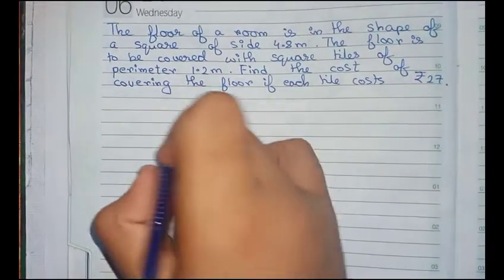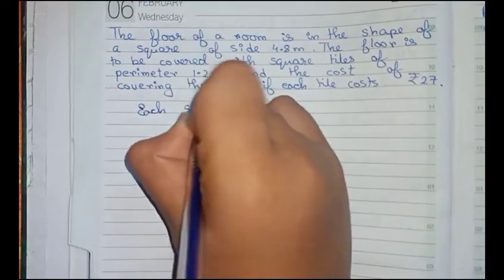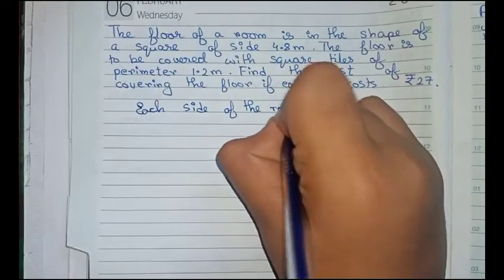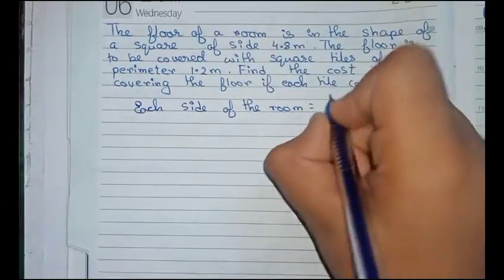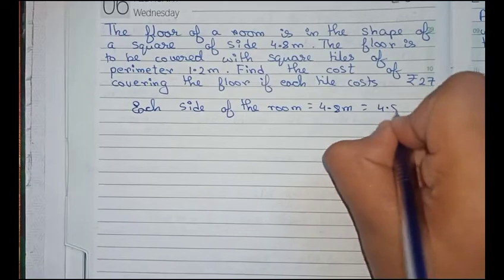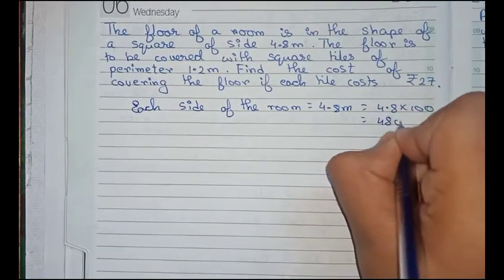First, each side of the room equals 4.8 meters. Converting to centimeters for convenience, that is 4.8 into 100, which equals 480 centimeters.